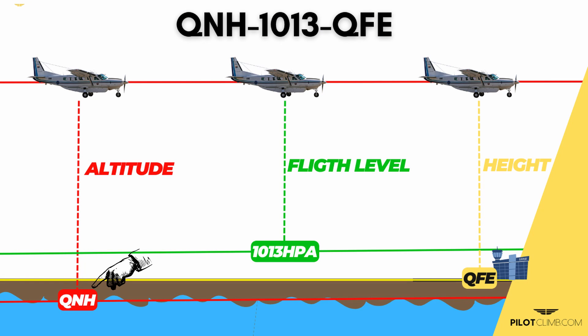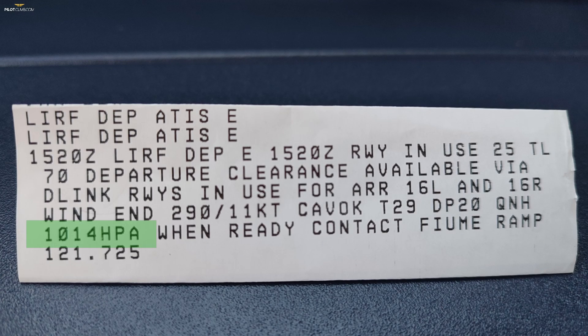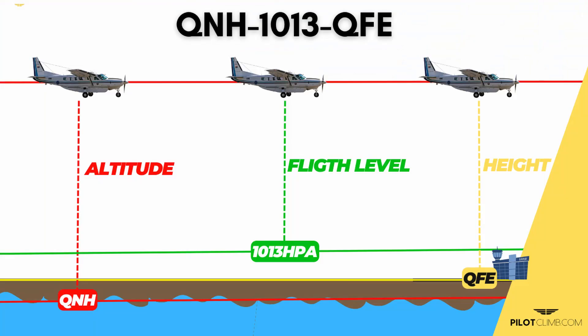But why are pressure references such as QNH, 1013, or the QFE so important? It's because depending on your phase of flight, you need to use a different pressure reference. The first pressure reference is the QNH. The QNH is the pressure reference at the mean sea level. So if you want to know the difference in feet between your aircraft and the mean sea level — which is called altitude — you need to set the QNH. You get this information from the meteorological service or from ATC, set the QNH on the altimeter, and you will be flying altitudes.